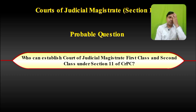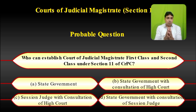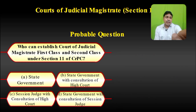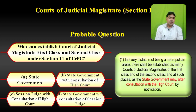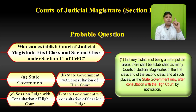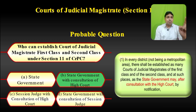Probable question: Who can establish court of Judicial Magistrate 1st class and 2nd class under section 11 of CrPC? Options: A. State government. B. State government with consultation of High Court. C. Session judge with consultation of High Court. D. State government with consultation of Session judge. Sub-clause 1 states: in every district not being a metropolitan area, there shall be established as many courts of Judicial Magistrate of 1st class and 2nd class as the state government may after consultation with the High Court specify. So the correct answer is option B.